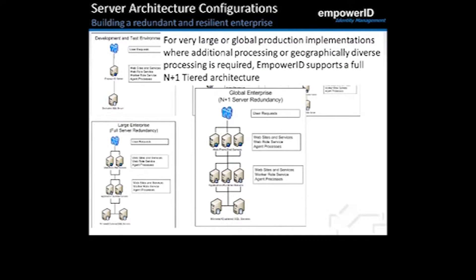For large production implementations where full server redundancy or more processing is needed, a second back-end server and SQL clustering or mirroring can be added. For very large or global implementations requiring additional or geographically diverse processing, Empower ID supports a full N plus one tiered architecture. You can add as many servers as needed to either the front-end or back-end, and we support communication zoning to place Empower ID servers in separate data centers so remote access to Active Directory, Exchange, Windows file servers, and other applications can be directed to a local resource instead of crossing the WAN.